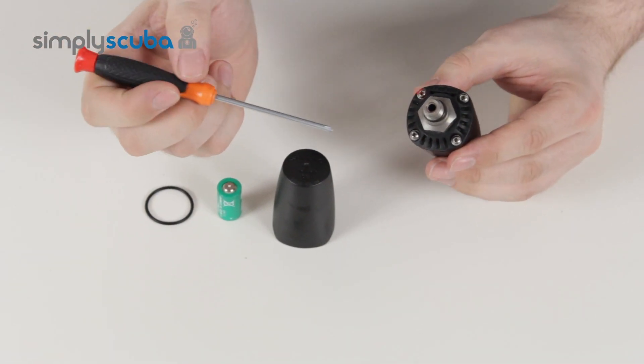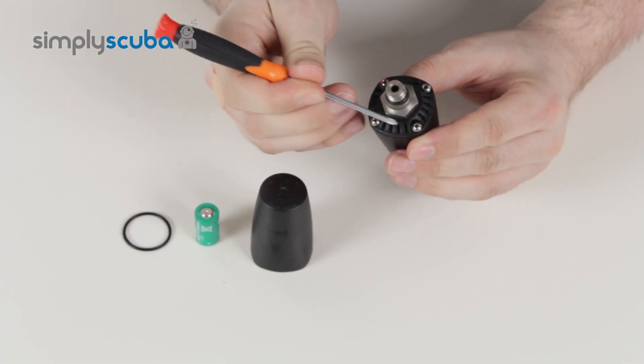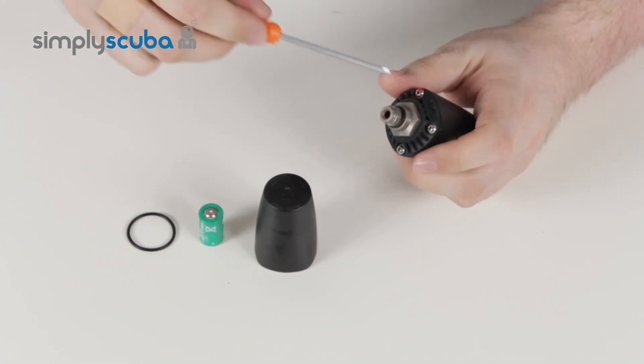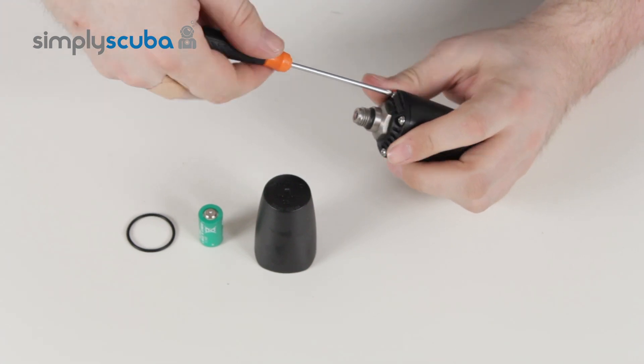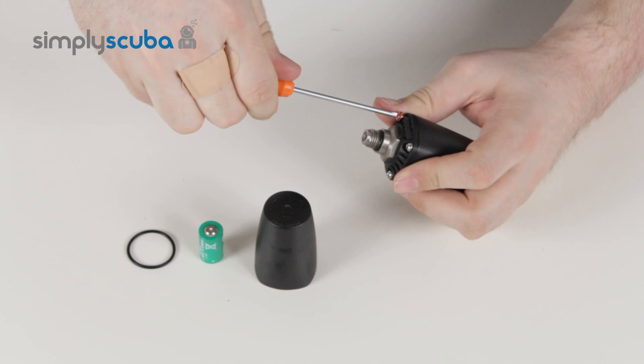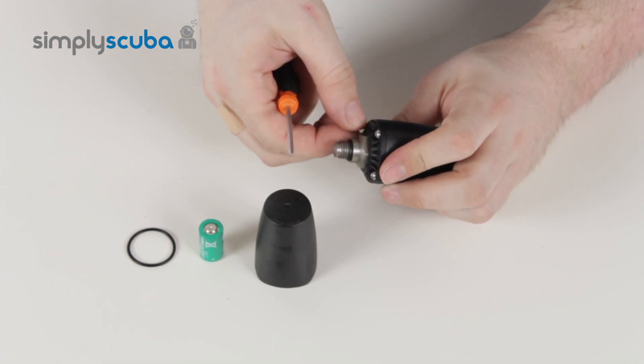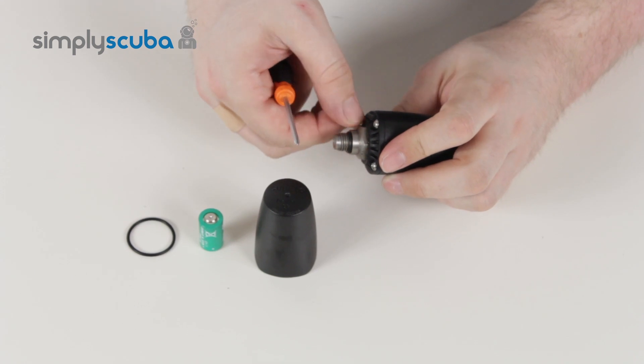When you remove the transmitter from your first stage, you'll have four Phillips head screws that need to be removed. Simply unscrew those and put them to one side because you're going to need them later.